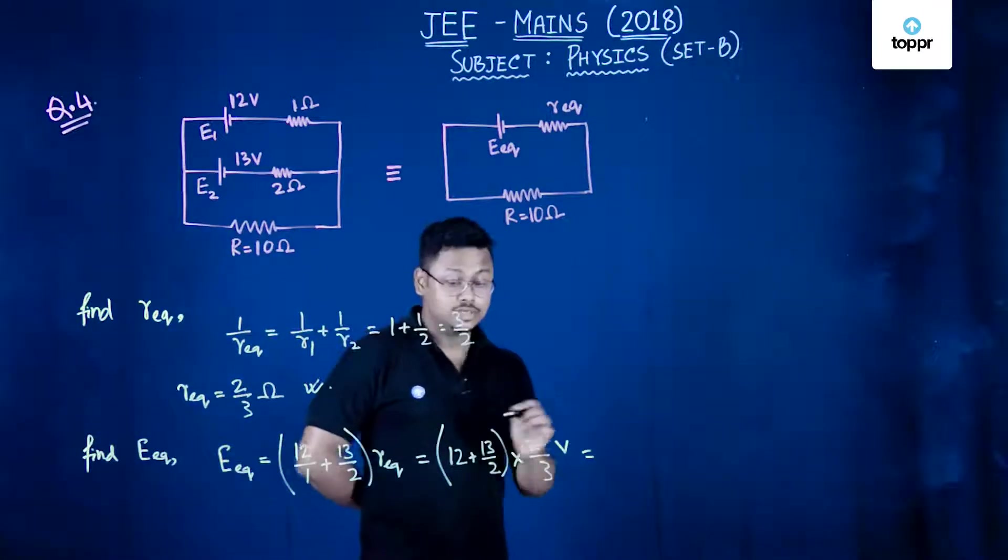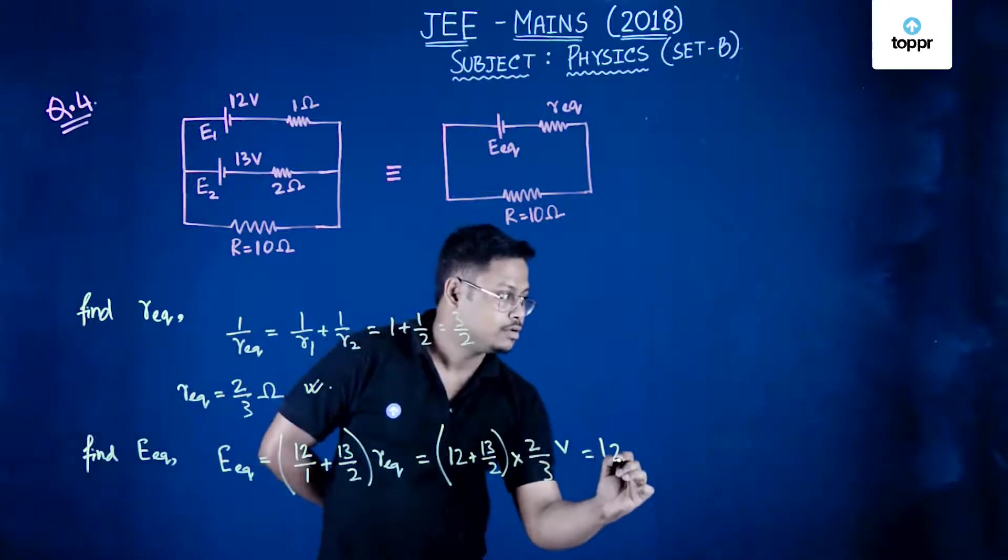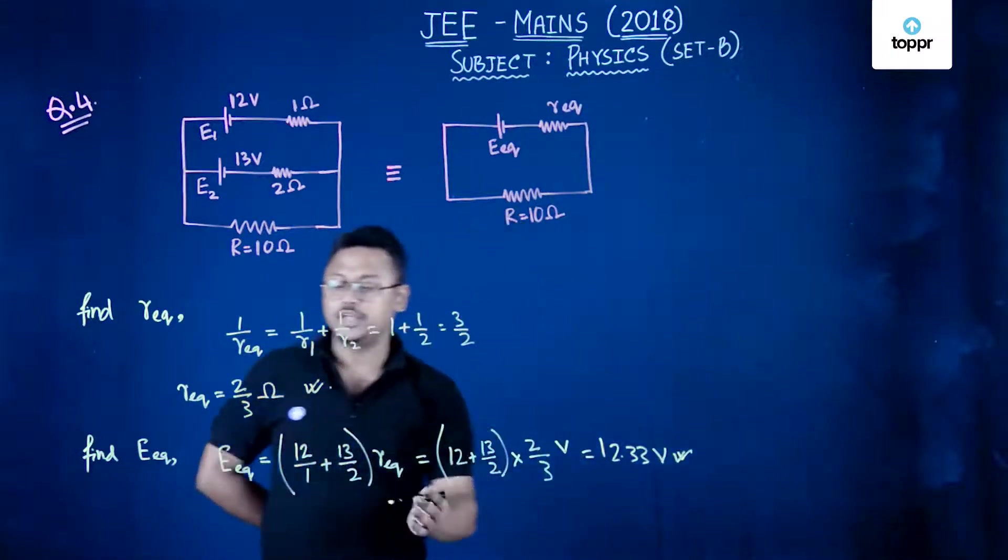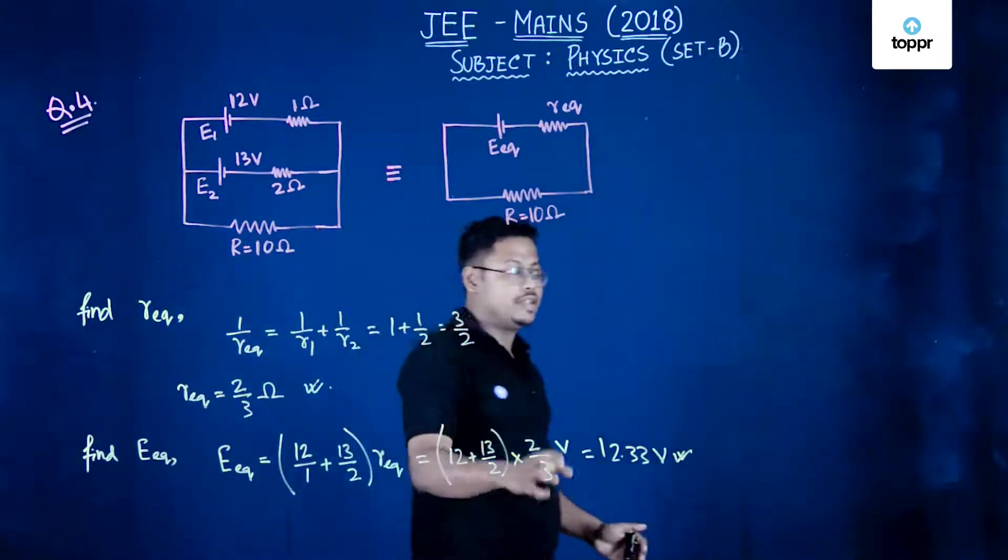This will turn out to be 12.33 volt. We have got the equivalent resistance, we have got the equivalent EMF.